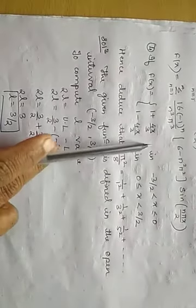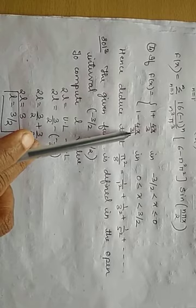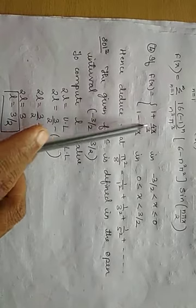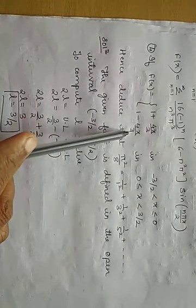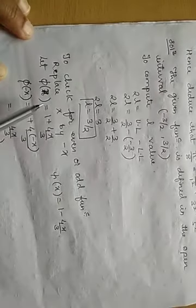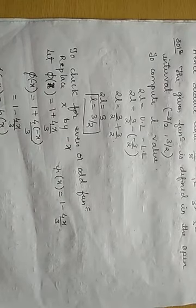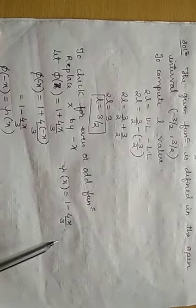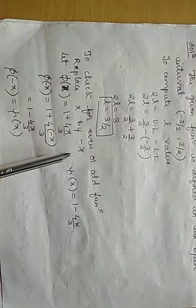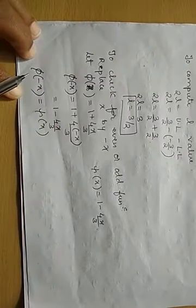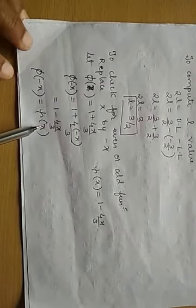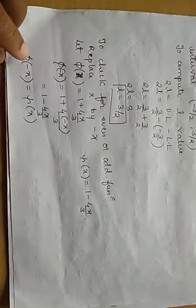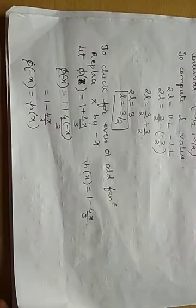Now I will check for the even and odd concept. When the function has been divided into 2 ranges, take one function as φ(x) and the second function as ψ(x). So when I take φ(x) as 1 + 4x/3 and ψ(x) as 1 - 4x/3, I will replace x by -x in φ(x). Because my range is from negative to positive, substituting -x, I see that φ(-x) equals ψ(x), which means the function is even. So for an even function, we compute a₀ and aₙ, and bₙ = 0.